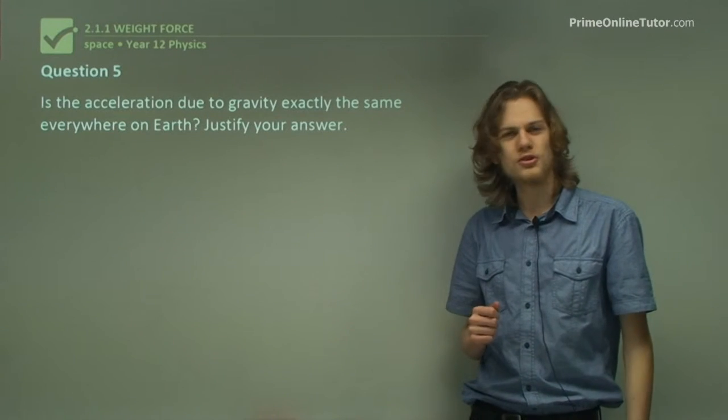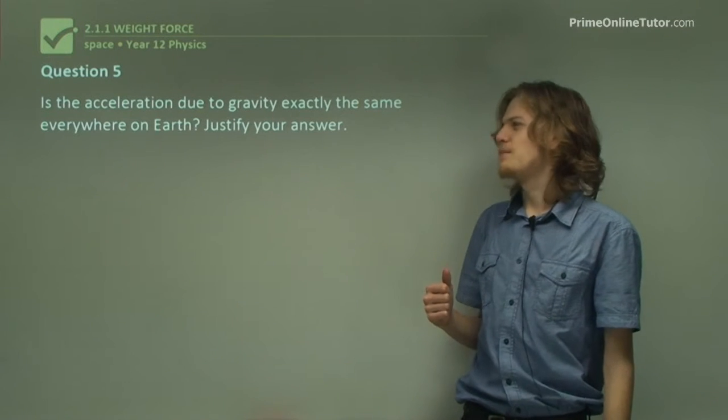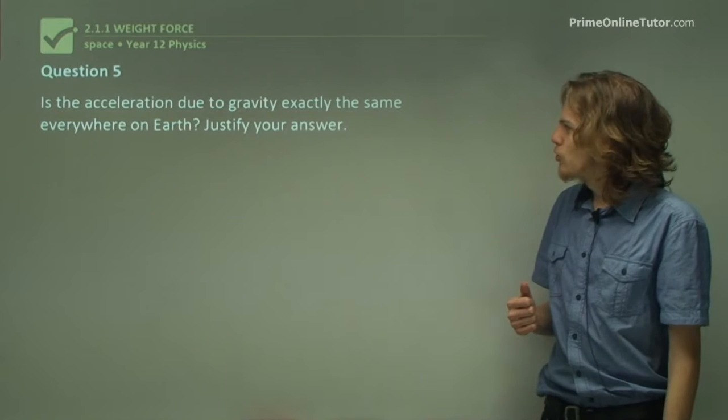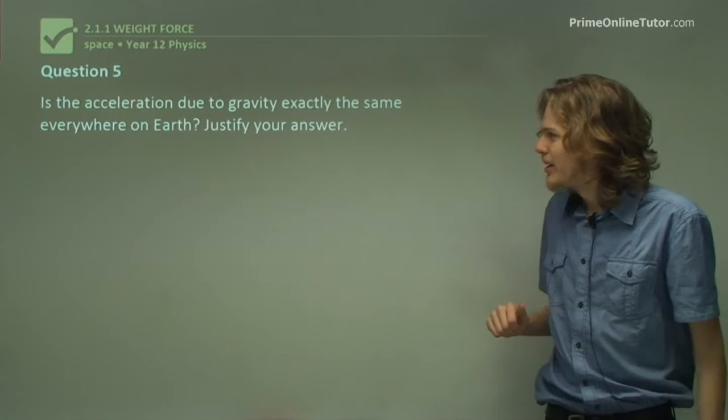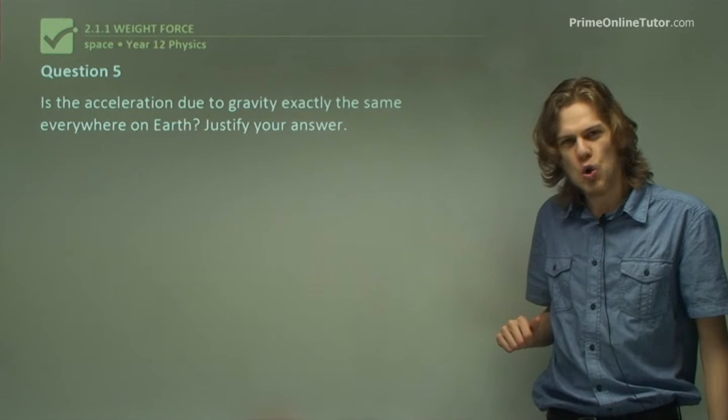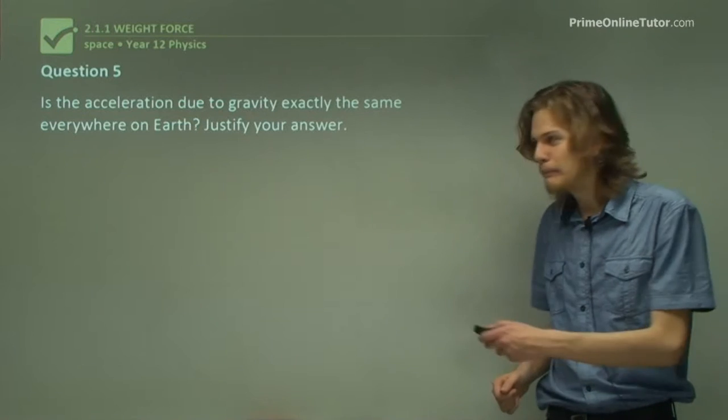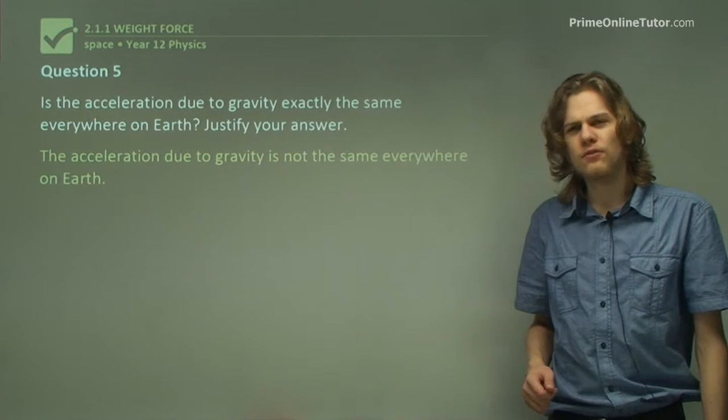Question 5. Last question of this section. Is the acceleration due to gravity exactly the same everywhere on Earth? Justify your answer. So we have two options here. We can say yes, or we can say no. The correct answer is that no. The acceleration due to gravity everywhere on Earth is not quite constant. So what would the reason for this be?